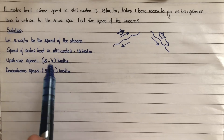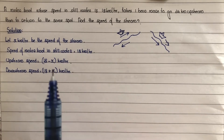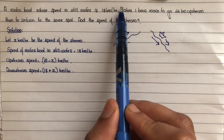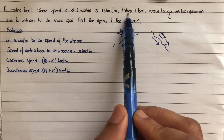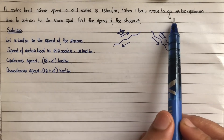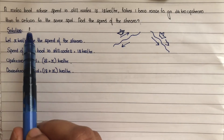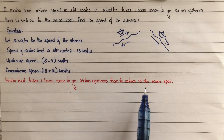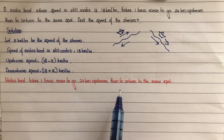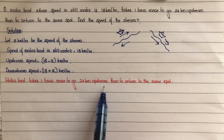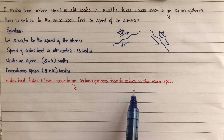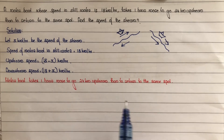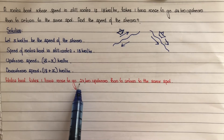Next step: write in equation form based on the given condition. The motorboat takes 1 hour more to go 24 km upstream than to return to the same spot. The motorboat goes upstream and returns downstream. In both cases, the upstream and downstream distance traveled is the same: 24 km.